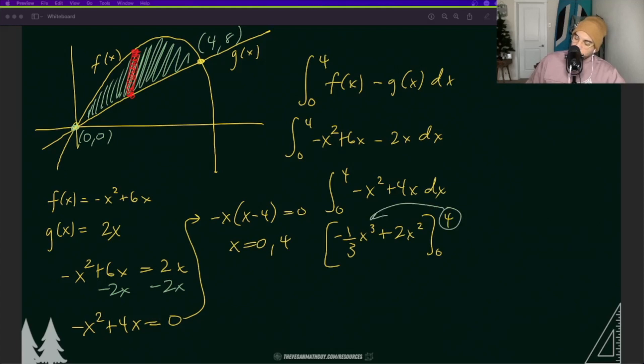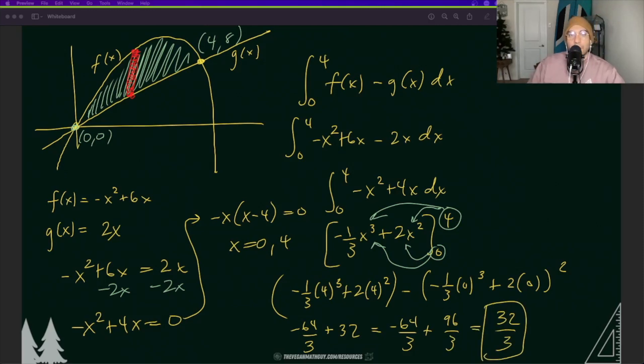I'm going to plug in the 4. We kind of already know this is going to be 0 but I'm still going to go ahead and plug in the 0 to show that we're still using the first fundamental theorem of calculus. Looks like we're going to get some common denominators and it looks like our area is 32/3.